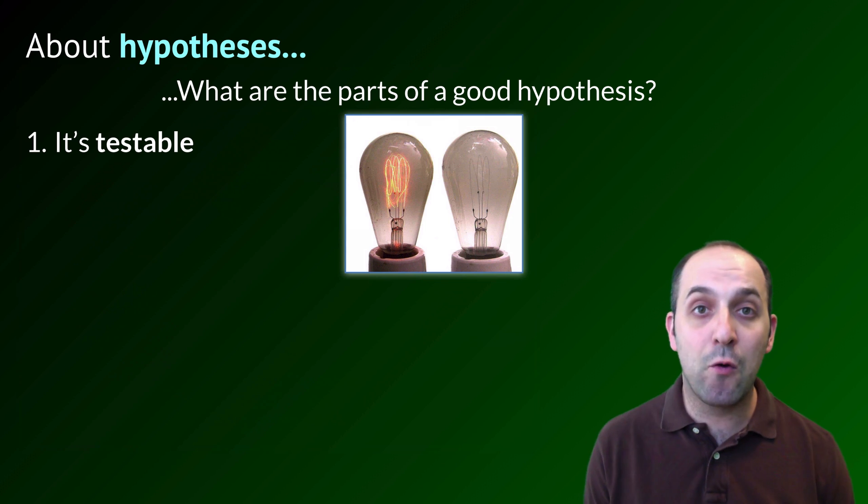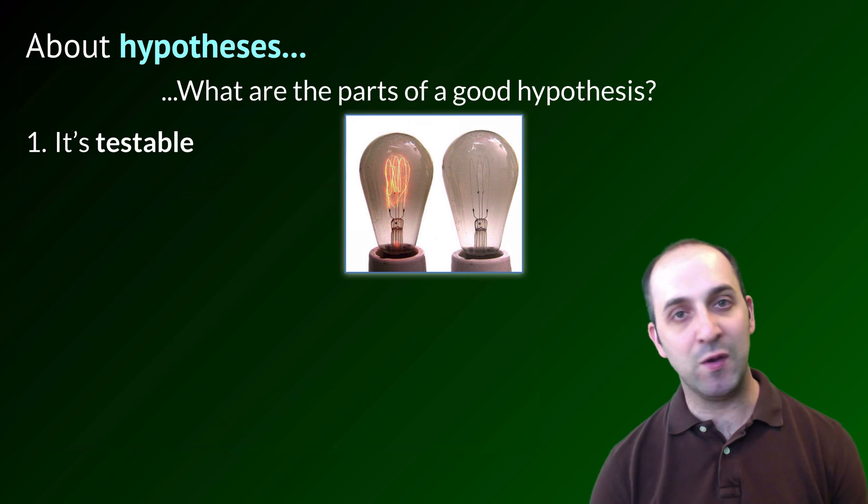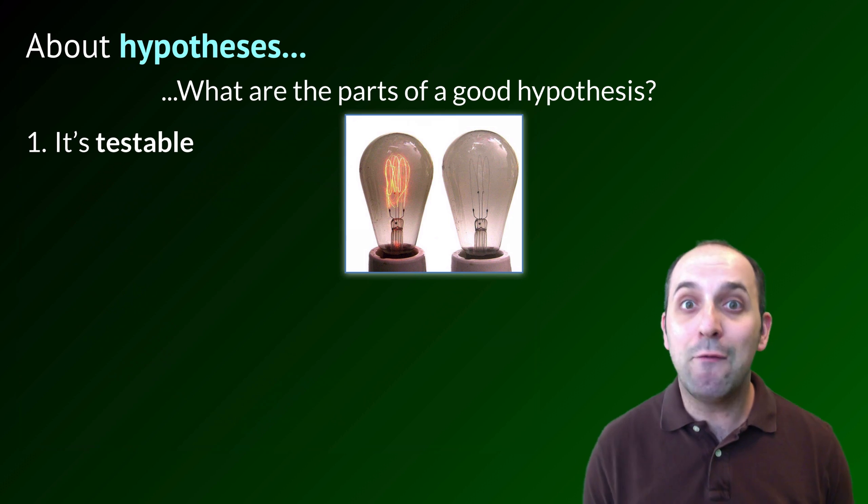So if a hypothesis for why the light bulb was out was 'the power switch is off for that light bulb,' I can test that by going and looking and seeing if that power switch is in fact off. And all of the hypotheses that you have come up with for this light bulb probably are testable. Where it might not be testable is something like 'a malevolent spirit wants this light bulb to be off no matter what I do.' That would not be something that we can develop a test for, and so it probably wouldn't be good grounds for scientific inquiry.